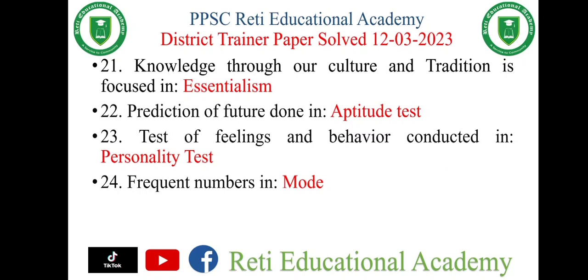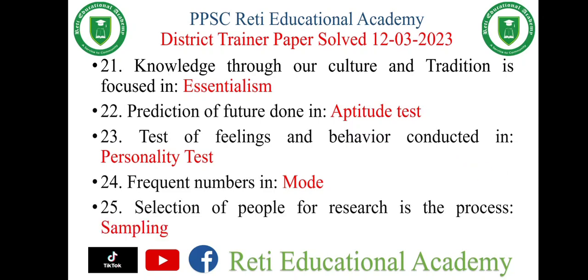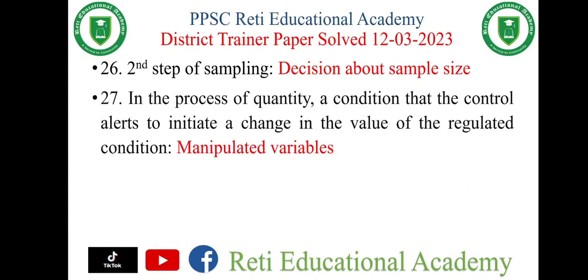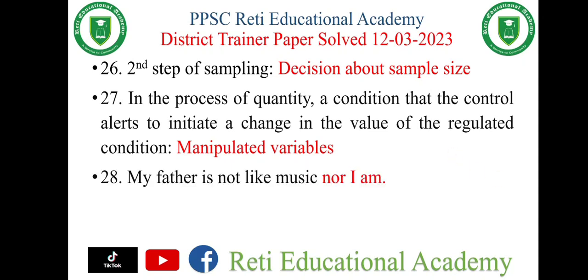Question number twenty-four: mode is the process where we can find the most frequent numbers. Question number twenty-five: selection of people for research is the process known as sampling. Question number twenty-six: the second step of sampling is decision about sample size. Question number twenty-seven: in the process of quantity, a condition that controls alerts to initiate a change in the value of a regulated condition is known as manipulated variables.